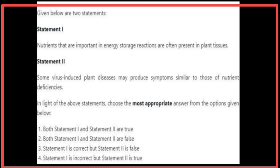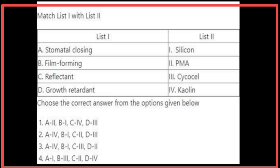Given below are two statements. Statement 1: Nutrients that are important in energy storage reactions are often present in plant tissues — Statement 1 is correct. Statement 2: Some virus-induced plant diseases may produce symptoms similar to those of nutrient deficiencies — Statement 2 is true. Both statements are true. Matching for stomatal action chemicals: stomatal closing chemical is phenyl mercuric acetate, film-forming element is silicon, reflectant is kaolin, and growth retardant is phosfon. The answer is 2, 1, 4, 3 — the first option.